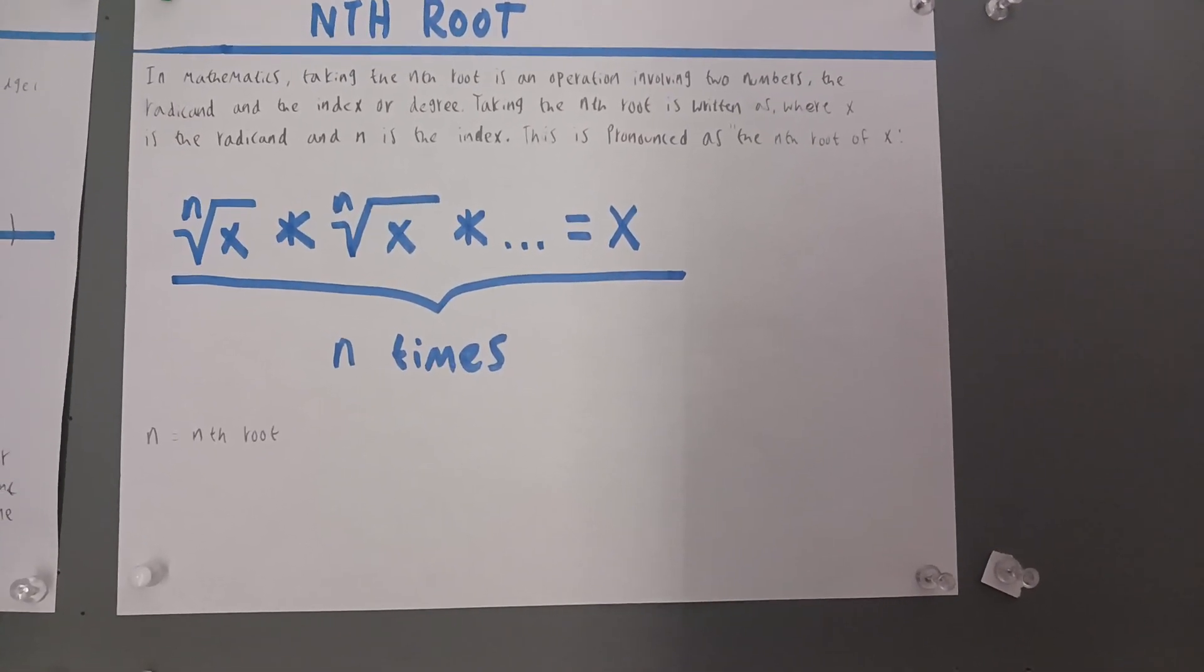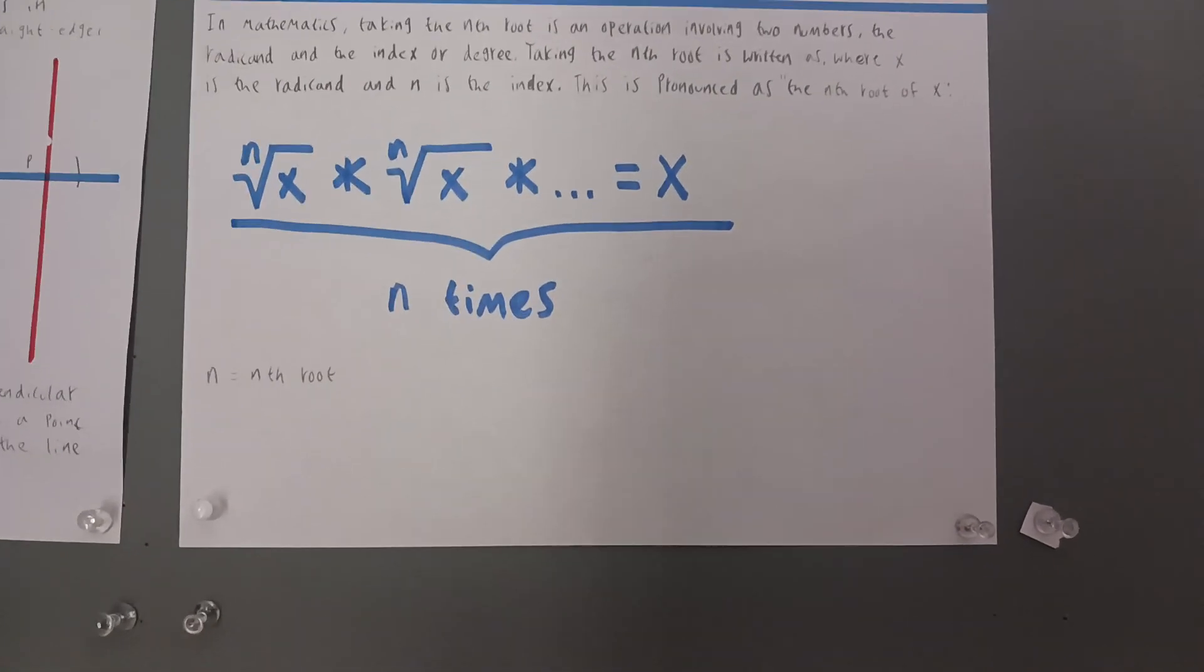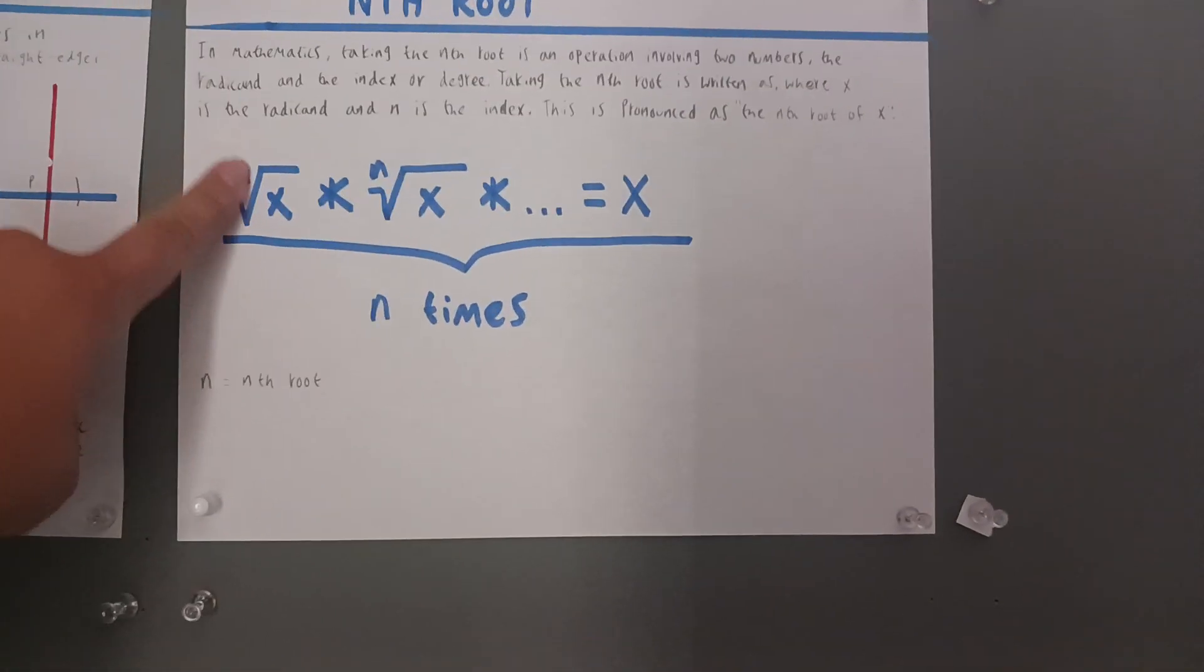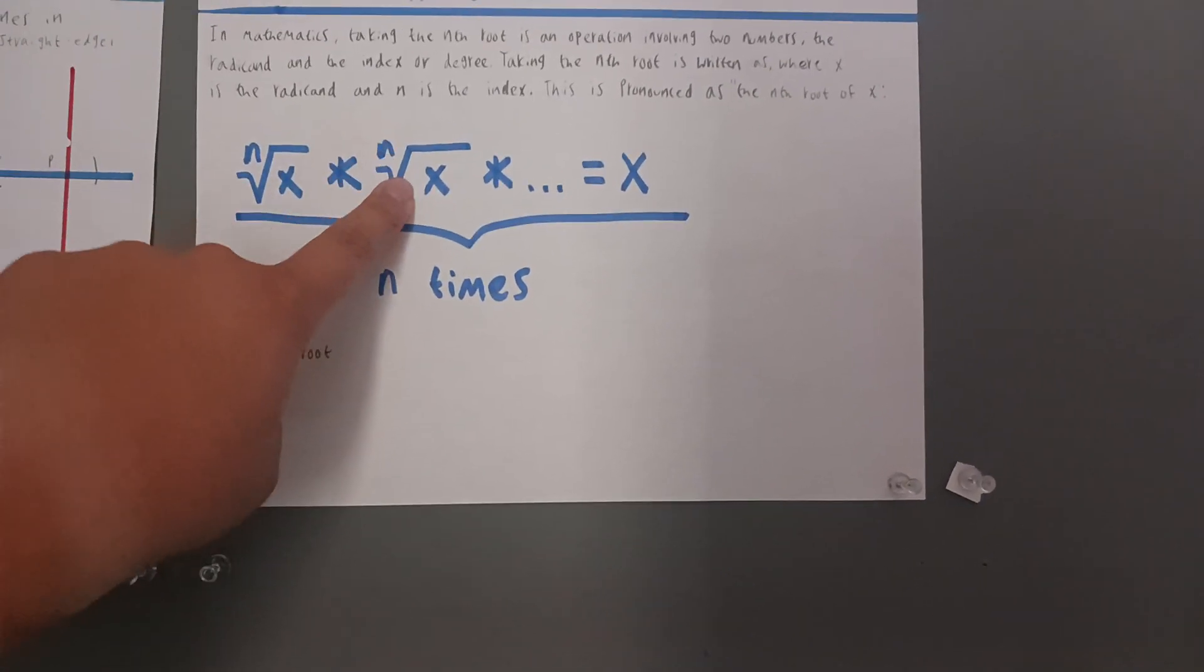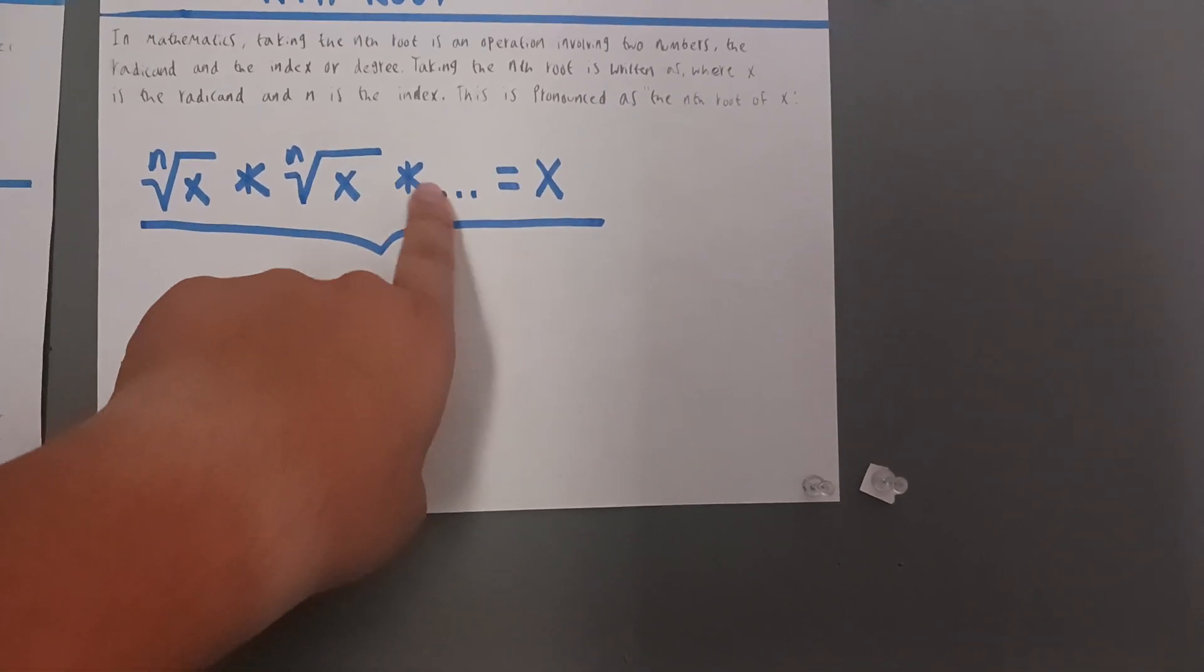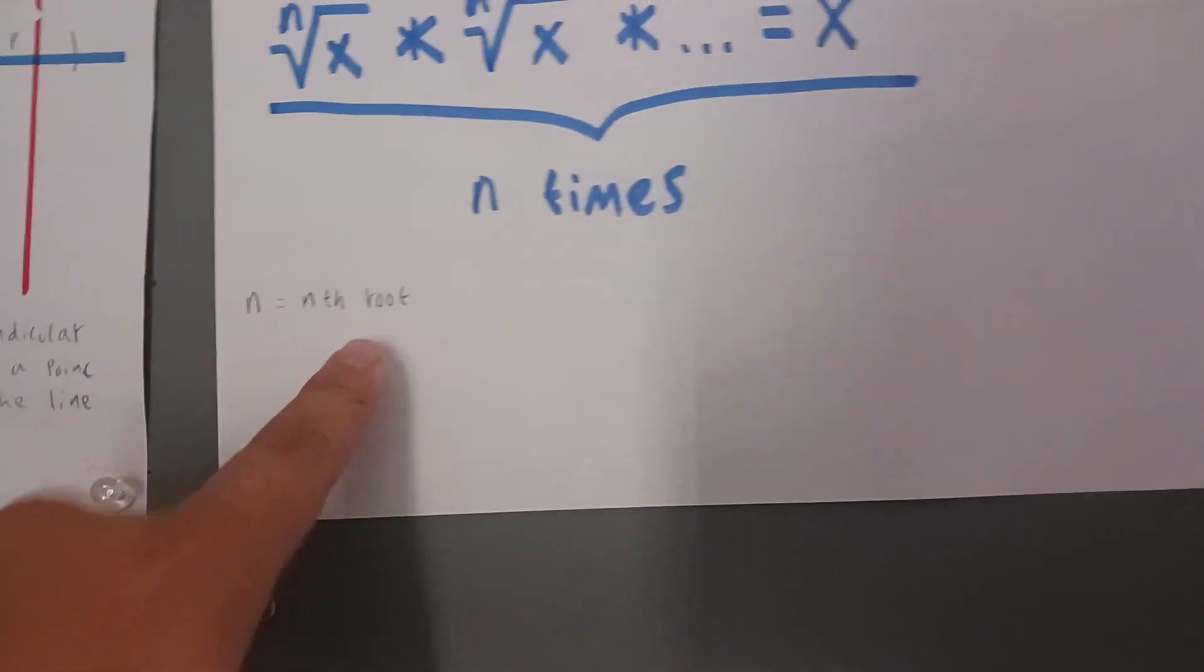This is pronounced as the nth root of x. Here's the nth root of x times nth root of x and so on, which is equal to x, n times. The n stands for the nth root.